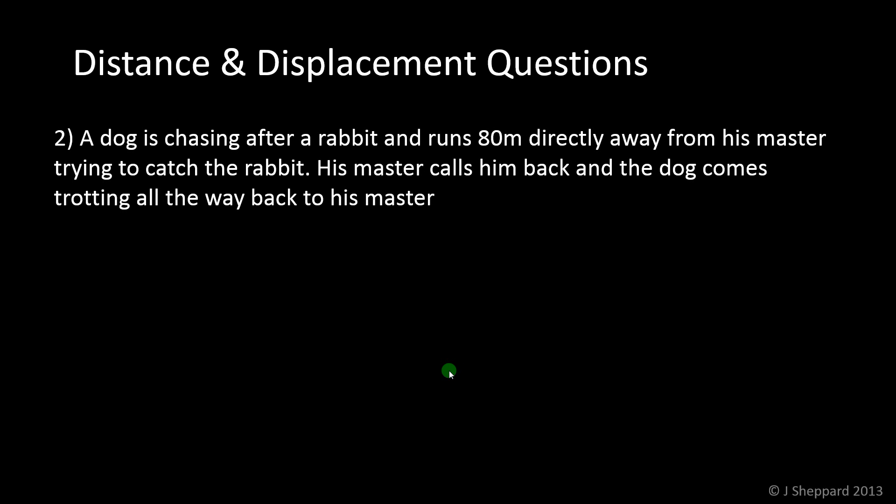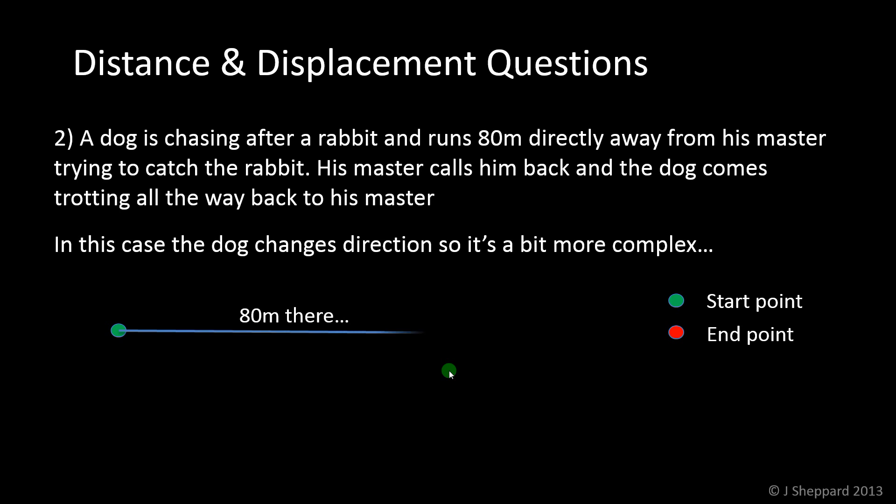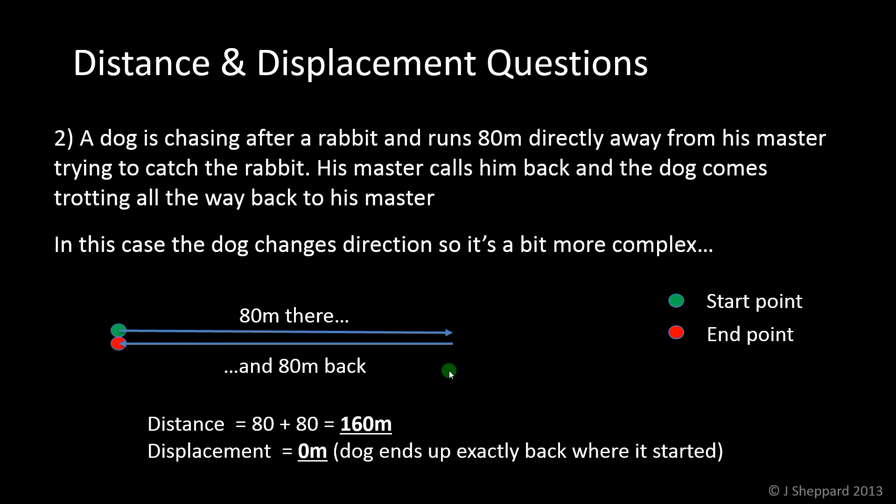Now, number 2. A dog chasing after a rabbit runs 80 metres directly away from his master, and then his master calls him back, and the dog comes trotting all the way back to his master. So, that means, if we use our little picture, he changes direction, so it's slightly more complicated. Here's our starting point, he goes 80 metres there, he goes 80 metres back. So, his distance travelled is those two 80s added together, 160 metres. But his final displacement, he's back where he started, so it's 0 metres. He hasn't gone anywhere as far as his displacement is concerned. So, 160 metres distance travelled, displacement 0 metres, because he's back where he started.